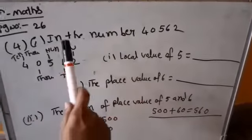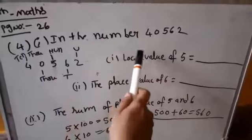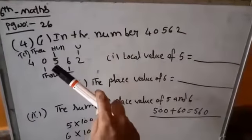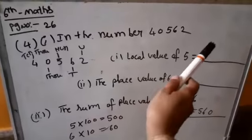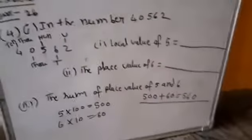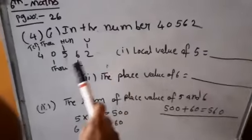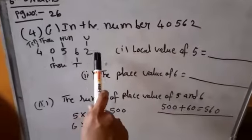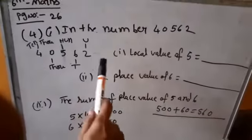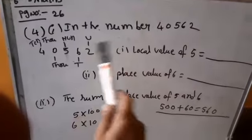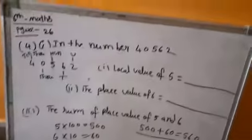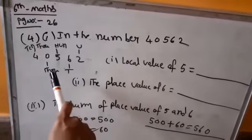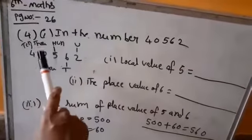Next, fourth problem, first one. In the number 40,562 — this is a 5-digit number. 2 is the units place, 6 is the tens place, 5 is the hundreds place, 0 is the thousands place, and 4 is the ten-thousands place.